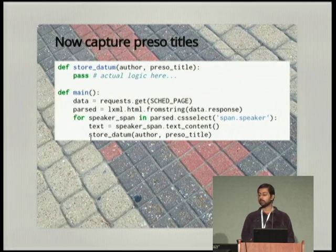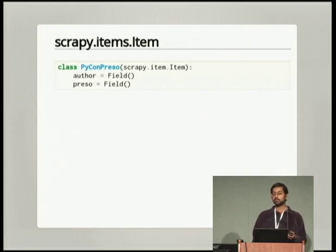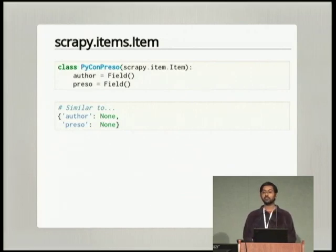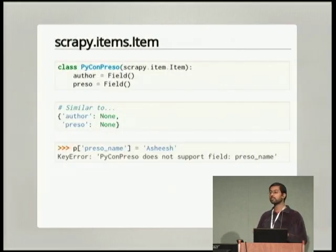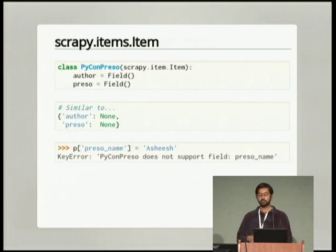What you might do is refactor using Scrapy's items class. Scrapy has this very simple wrapper for dictionaries — conceptually similar to a named tuple. The one serious feature that scrapy.item.Item has is that if you access the dictionary via a key that doesn't exist, it gives you a nice error. So when you write your extraction code, you can get all the way to the end and know you have no typos in your dictionary key names.